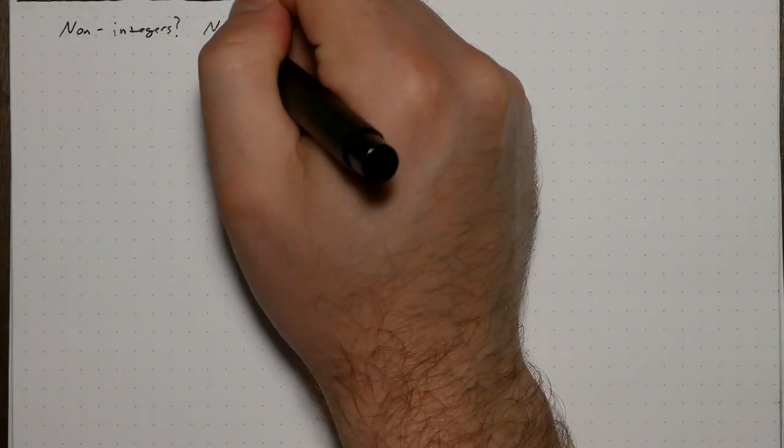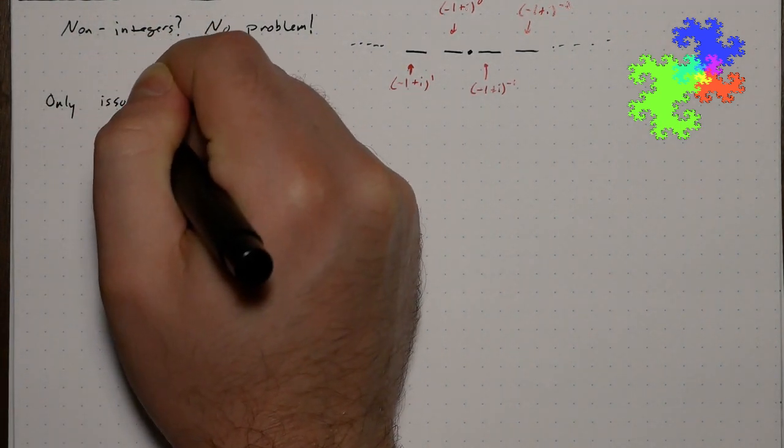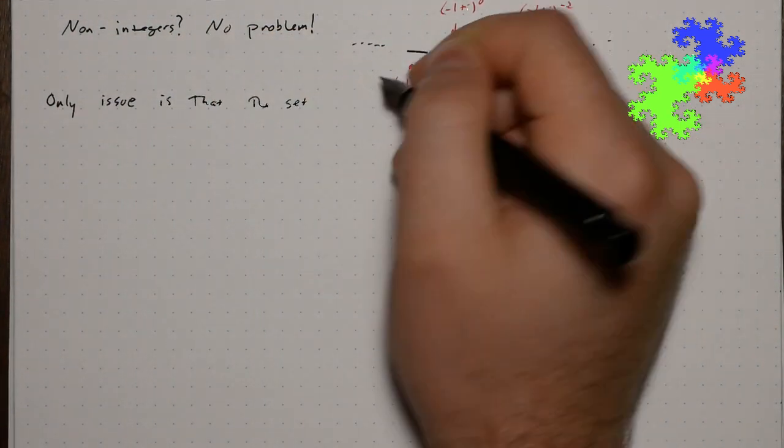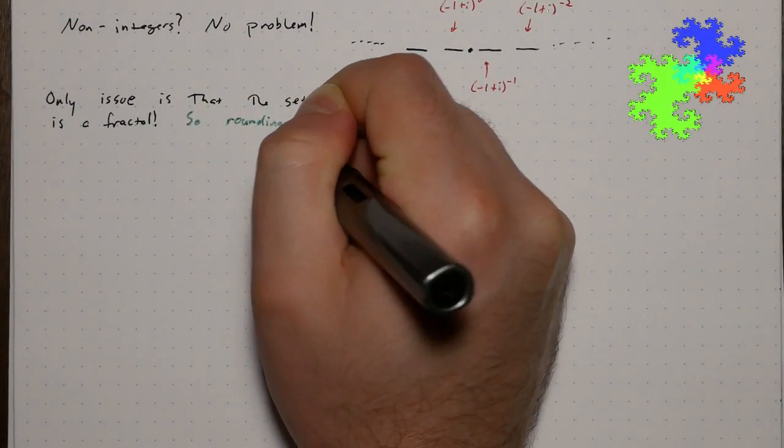What about non-integers? No problem. It's actually just like any other base. Unfortunately, the twin dragon fractal is back to bite us. The set of points that starts with zero point blah blah blah looks like the twin dragon fractal, which means that rounding by truncation gets interesting.